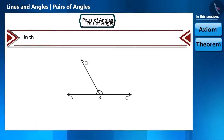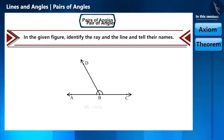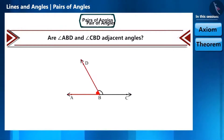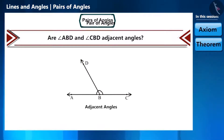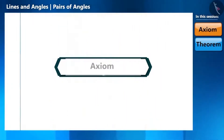In the given figure, identify the ray and the line and tell their names. Here AC is a line and BD is a ray. Are angles ABD and CBD adjacent angles? Yes. Now let's discuss an axiom related to this.